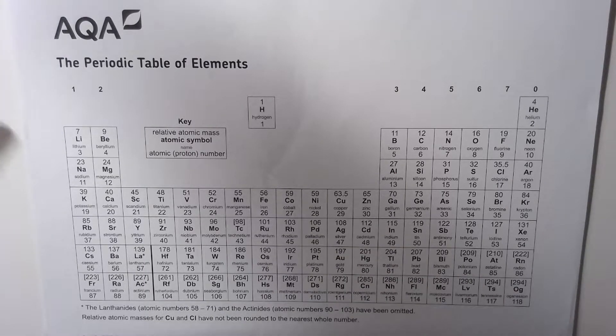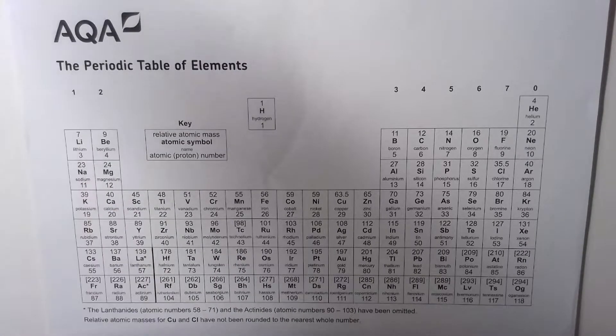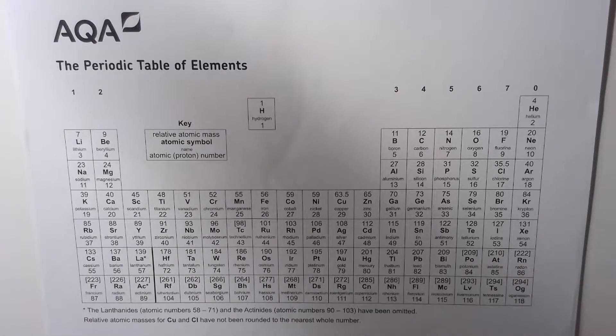In your chemistry exams you'll be given the periodic table of elements. This is the version that AQA will give you, and the first thing you need to do, probably in the first five minutes, is to annotate as much of this periodic table as possible. Make it as useful as you possibly can.